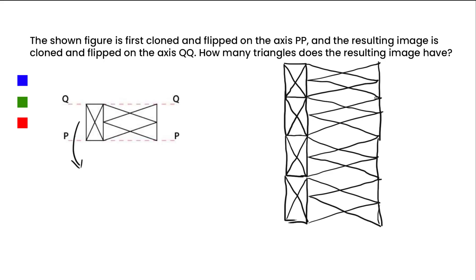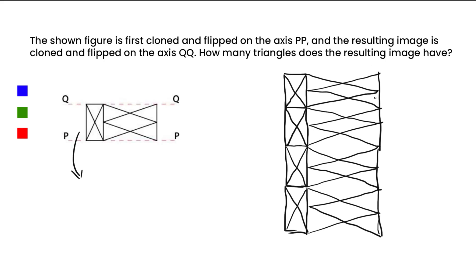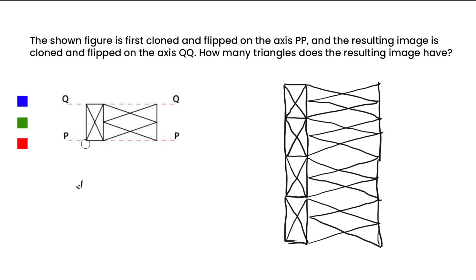Now we want to calculate how many triangles are in this entire image. I'm changing the color for better visibility. Counting: one, two, three, four, five, six, seven — that's seven — then eight. So we have eight so far, then plus one, two, three, four — that's plus four more.